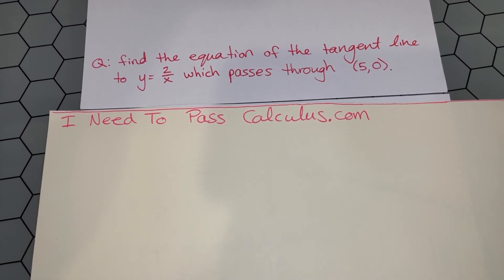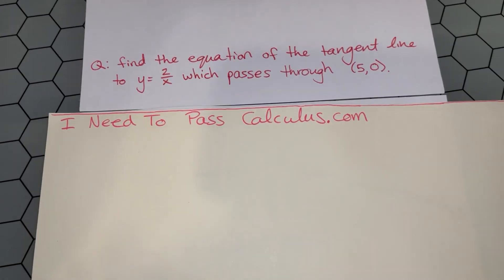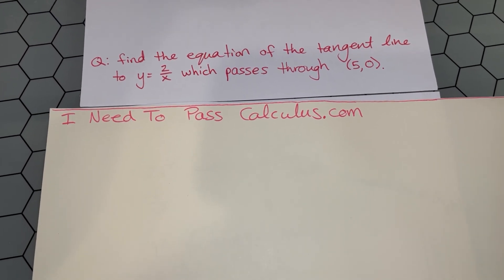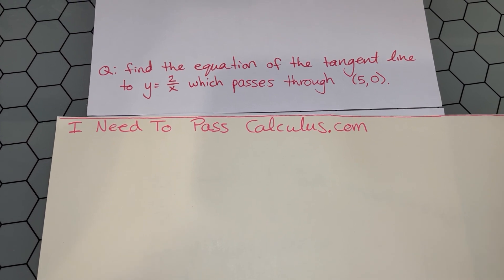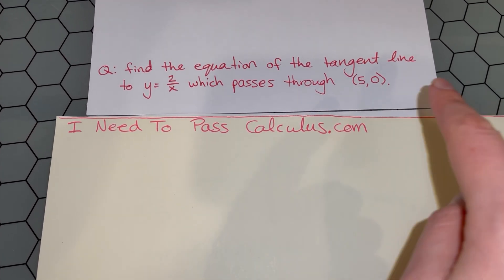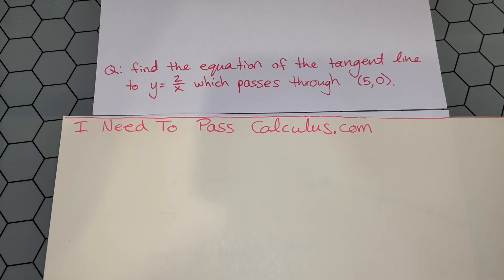Welcome back my calculus adventurers. Here's our question today. Find the equation of the tangent line to the curve y = 2/x that passes through the point (5, 0).